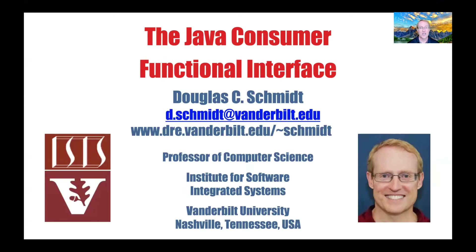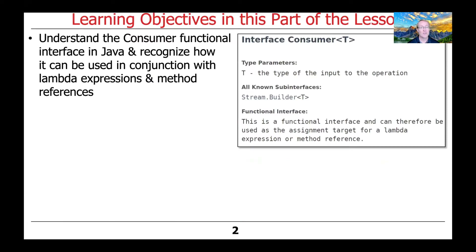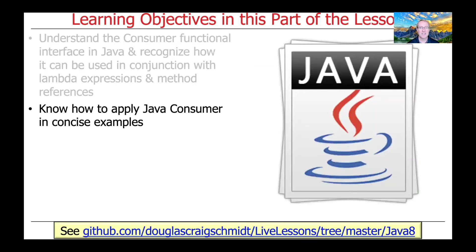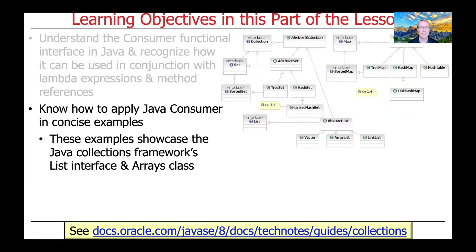We're now going to discuss the Java Consumer Functional Interface. In this part of the lesson, we'll cover the structure and functionality of the Java Consumer Functional Interface, as well as describe how it can be used in conjunction with Java Lambda expressions and/or method references. As usual, we'll look at an example you can get in open source form from my GitHub repository in the link at the bottom of the slide.